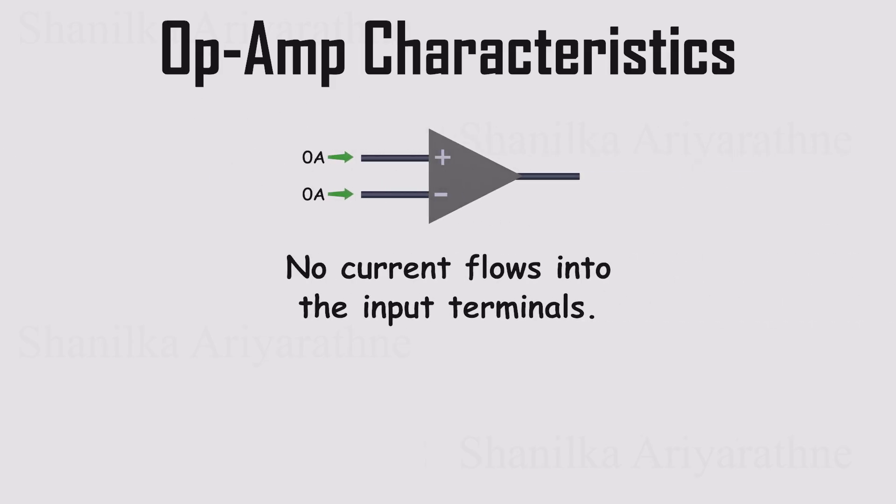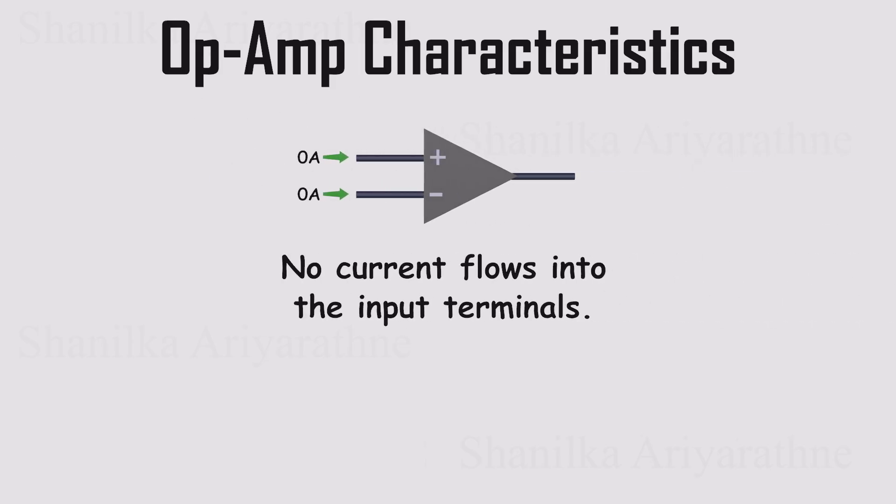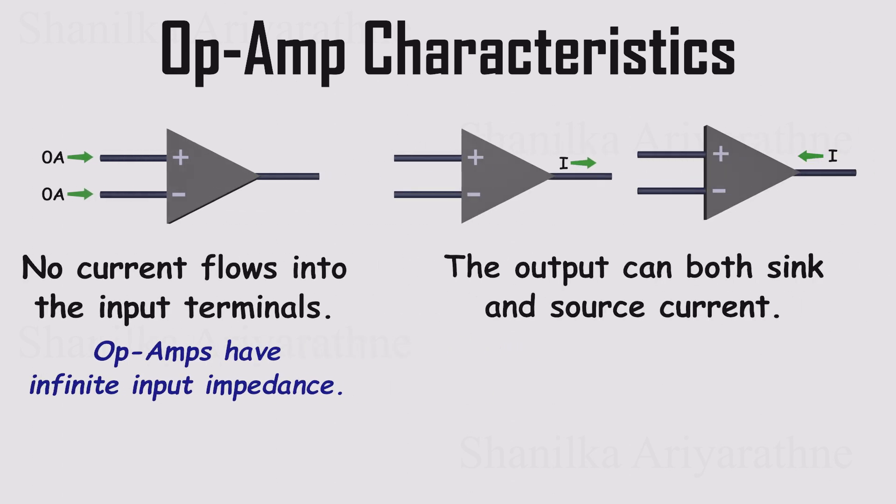First, they don't draw current from their inputs, which means they won't disturb delicate sensors or circuits they're connected to. Technically, there is a tiny leakage current, but it's so small we can usually ignore it. On the output side, an op-amp can both supply and absorb current, and thanks to its low output impedance, it can drive loads with very little voltage loss.